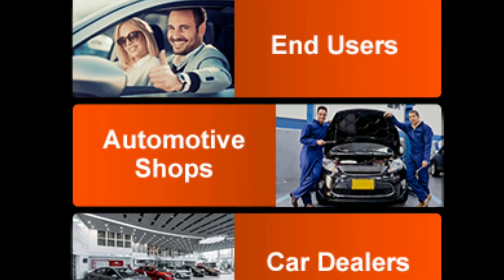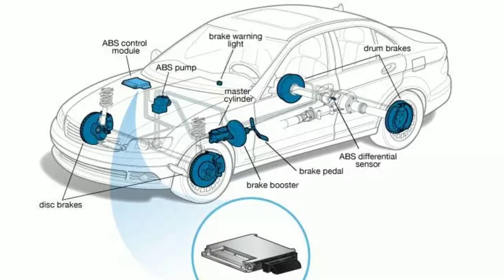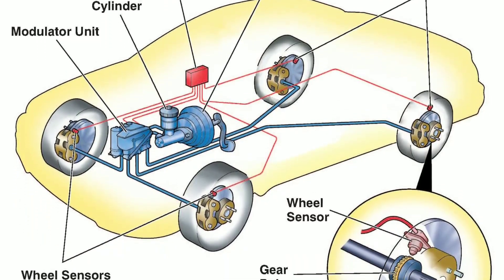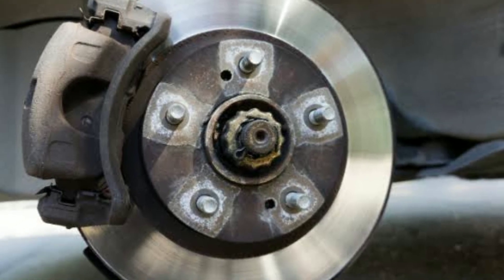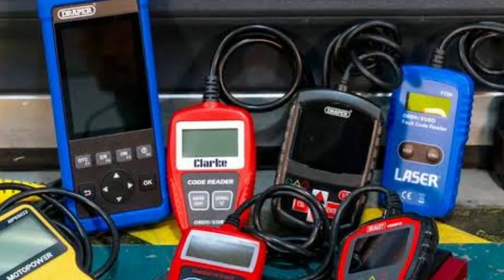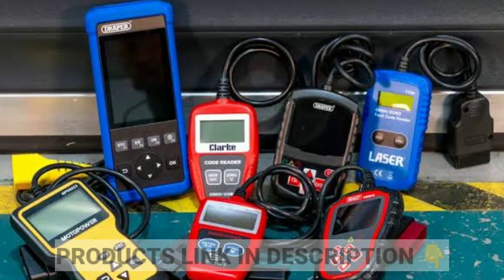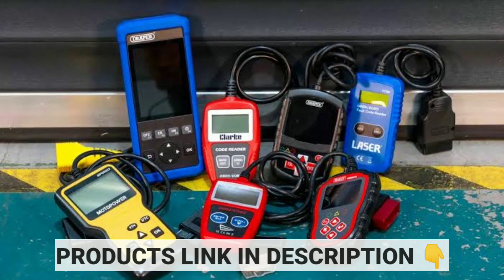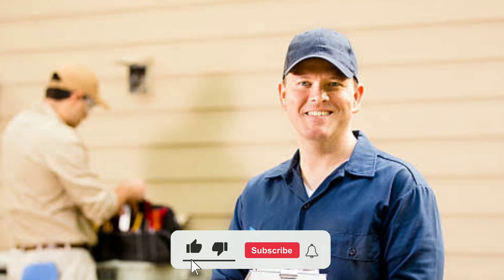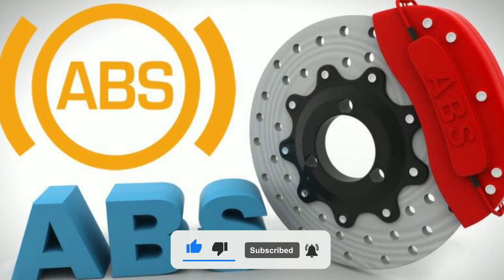Finally, that's been our guide to reading ABS codes and understanding what they mean for your vehicle's safety. Remember, staying proactive about ABS issues can go a long way in ensuring your brakes work as they should. If you're interested in learning more about the best OBD2 scanner or want to purchase one, click the link in the description below. That's all for today's video — I hope you found it helpful. Please give it a thumbs up and subscribe to the channel for more videos like this. Thanks for watching.